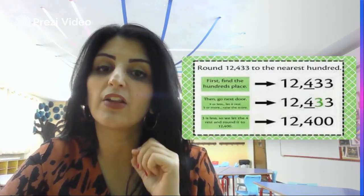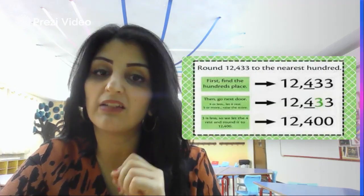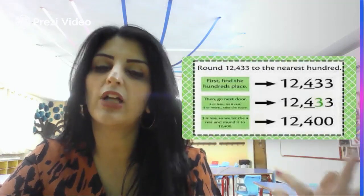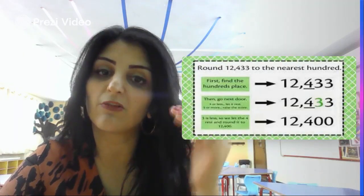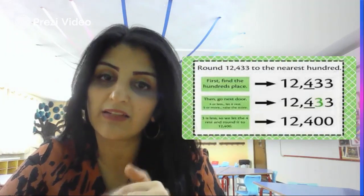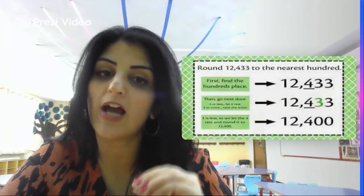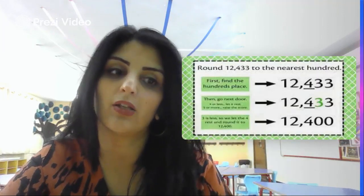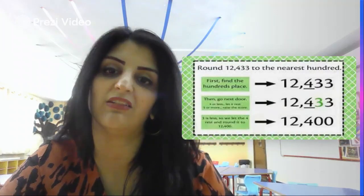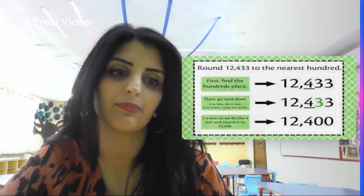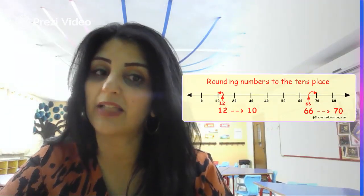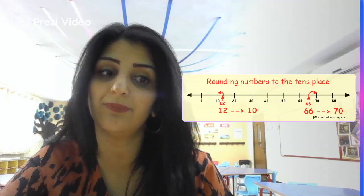Always first find the hundreds place, then go to the next door — knock to the next door and look at it. If the number is four or less, let it rest. Five or more, increase the value — add one to that value itself. On a number line: 12 becomes 10, and 66 becomes 70.